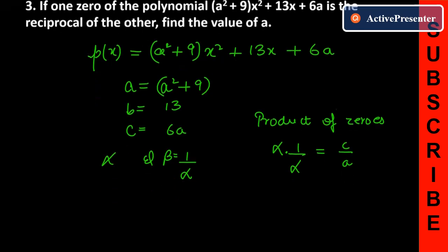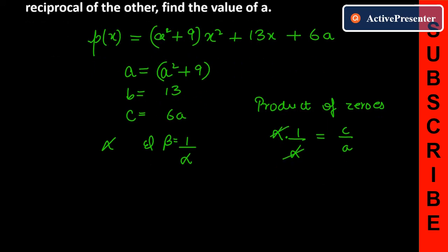So you have α times 1/α equals c/a. The c value is 6a and a value is (a² + 9). Cross multiplication gives a² + 9 = 6a.